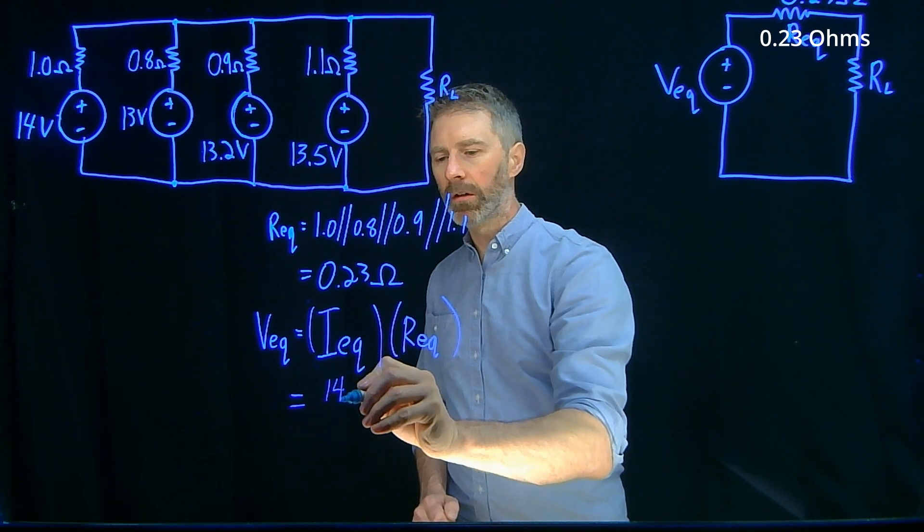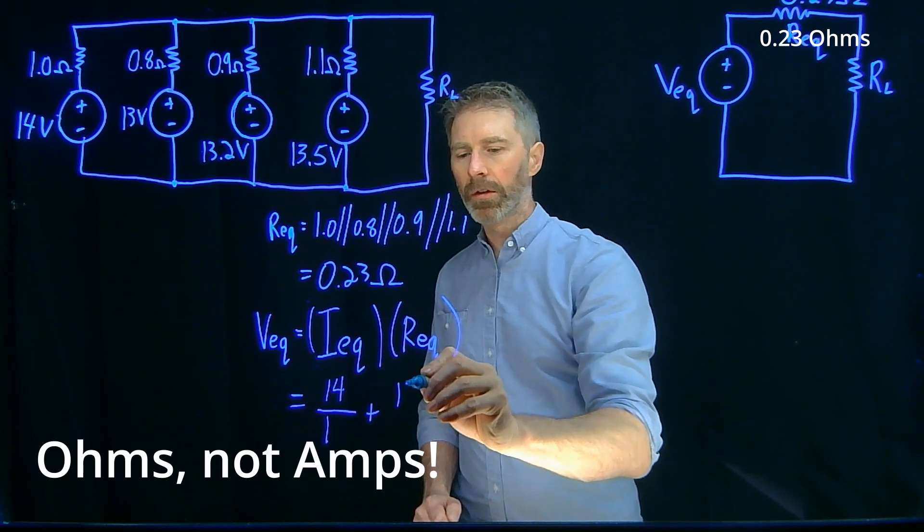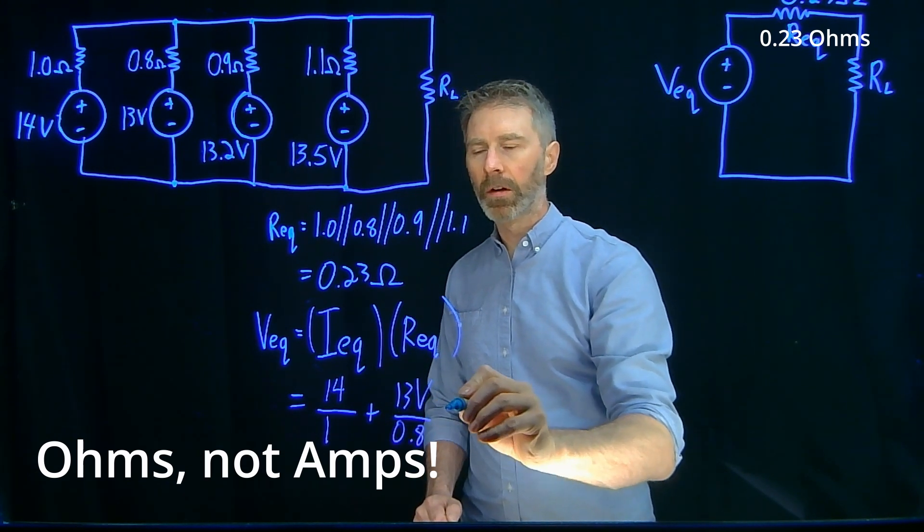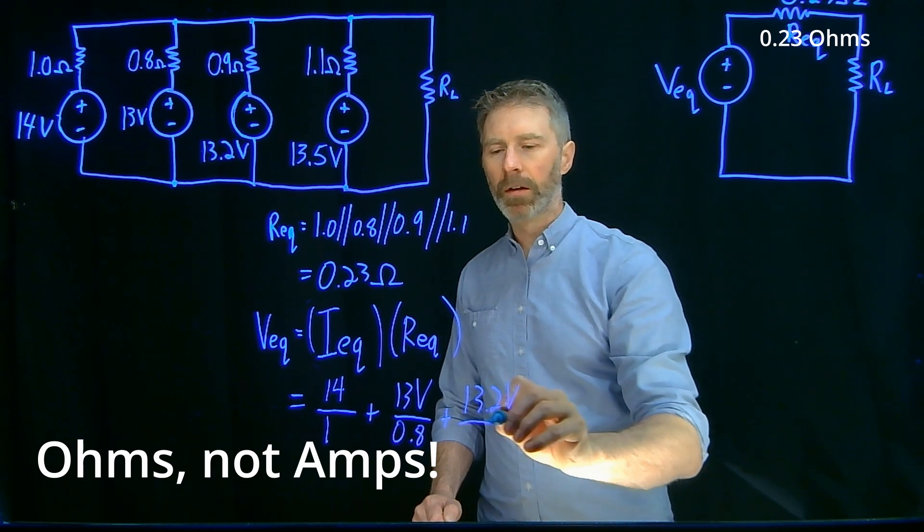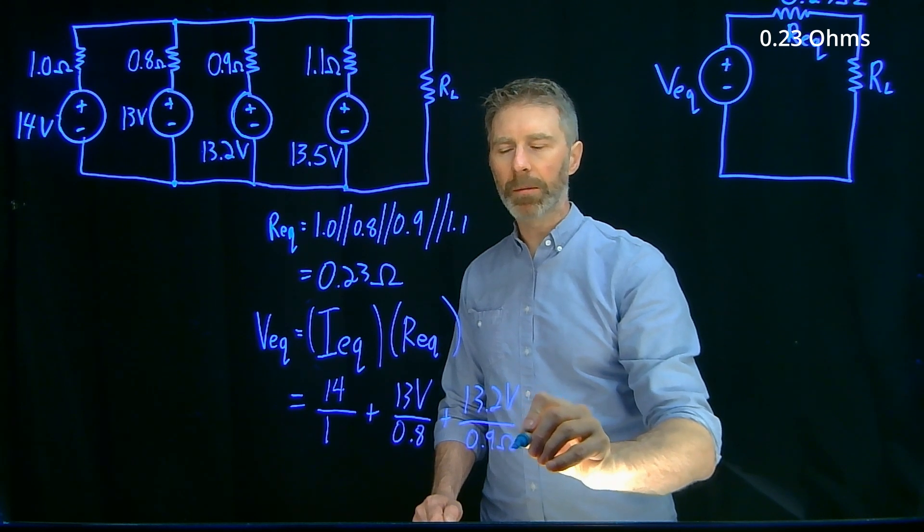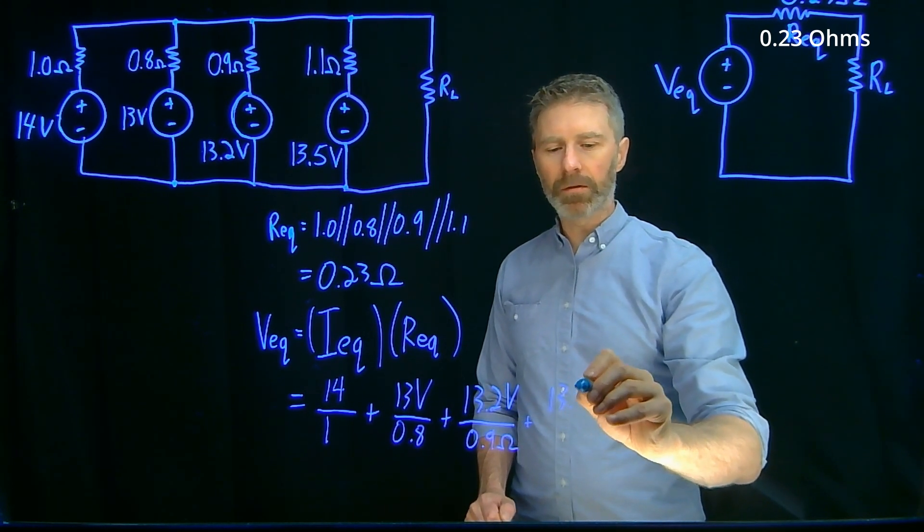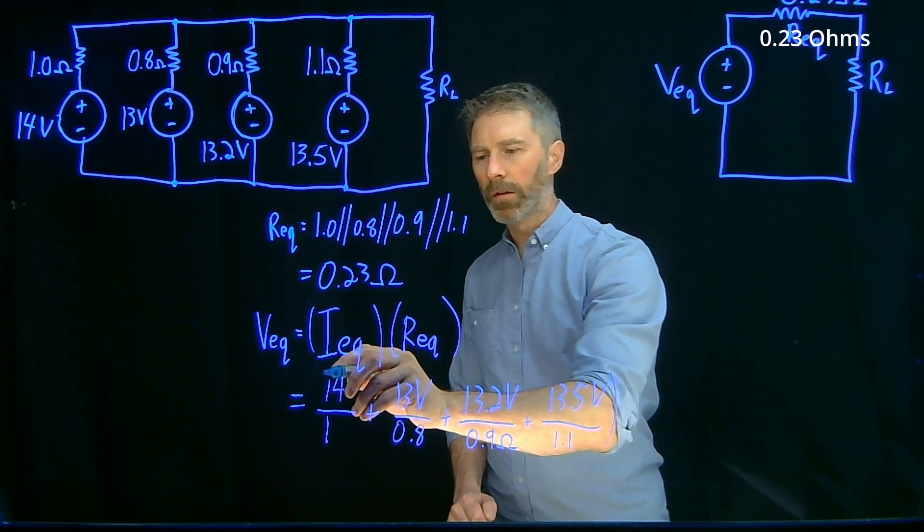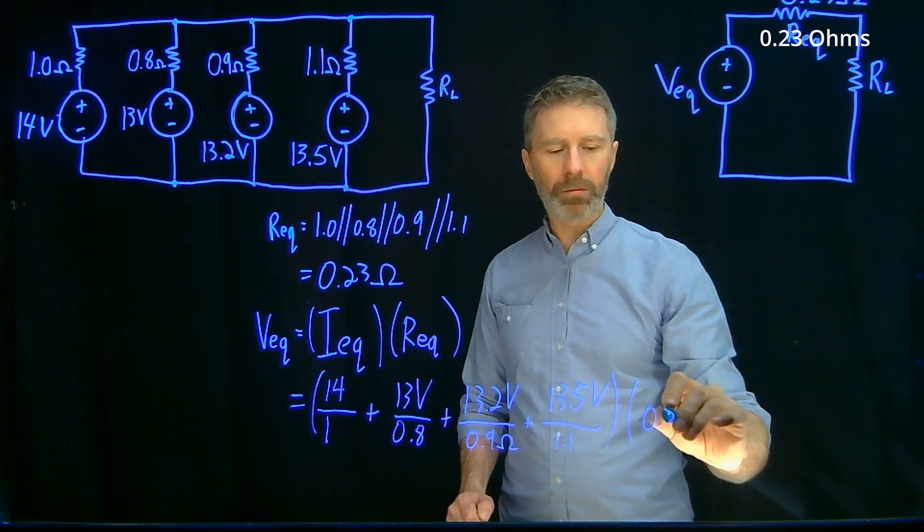be 14 volts over 1 ohm plus 13 volts divided by 0.8 ohms plus 13.2 volts divided by 0.9 ohms, plus 13.5 volts divided by 1.1 ohms. So that would give me the equivalent current, and then multiplied by 0.23 ohms.